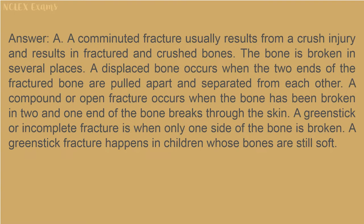Answer: A. A comminuted fracture usually results from a crush injury and results in fractured and crushed bones broken in several places. A displaced fracture occurs when the two ends are pulled apart and separated. A compound or open fracture occurs when the bone is broken in two and one end breaks through the skin. A greenstick or incomplete fracture is when only one side of the bone is broken — greenstick fractures happen in children whose bones are still soft.